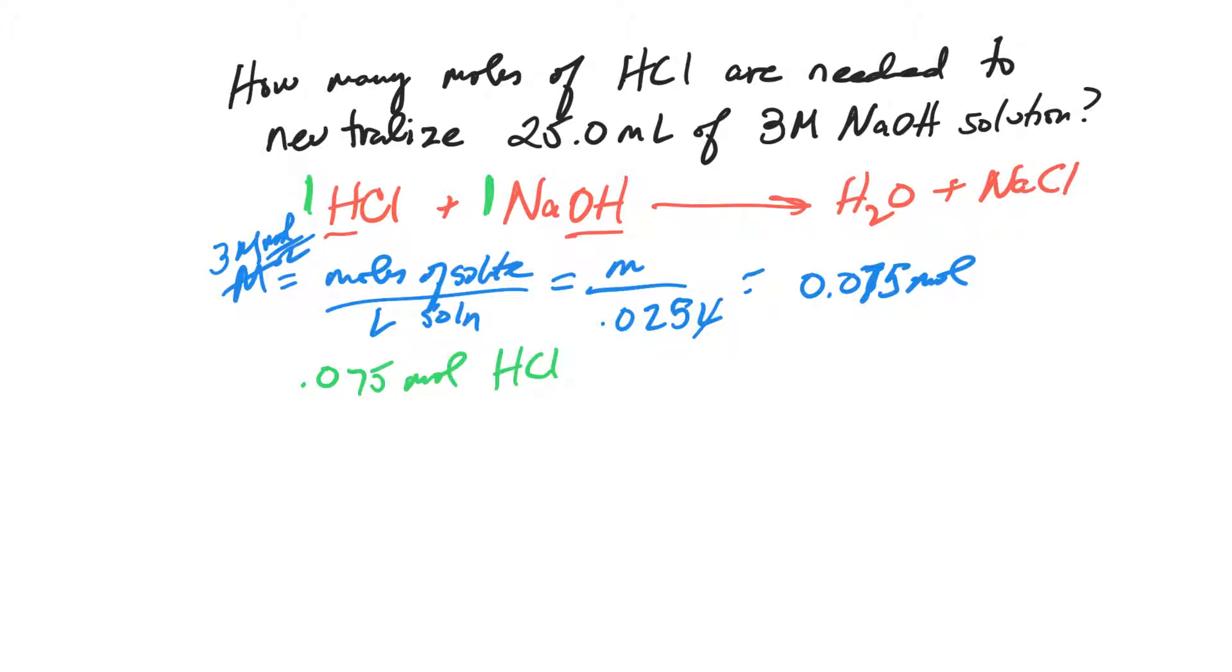Now, how many grams is that? In one mole, I have to go through the periodic table and add it together. When I added it up, it's 36.46094 grams per mole. Moles will cancel. Multiply those together and I have 2.7345705 grams. It looks like I've got one significant digit, so it will be 3 grams. I need 3 grams of hydrochloric acid.